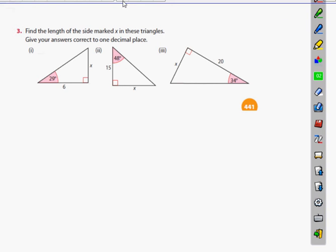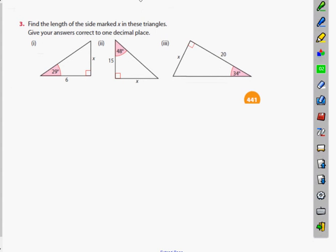Okay, so what we have is find the length of the side marked x in these triangles. Give your answers correct to one decimal place. So the first thing I need to decide if I'm using sine, cos, or tan.